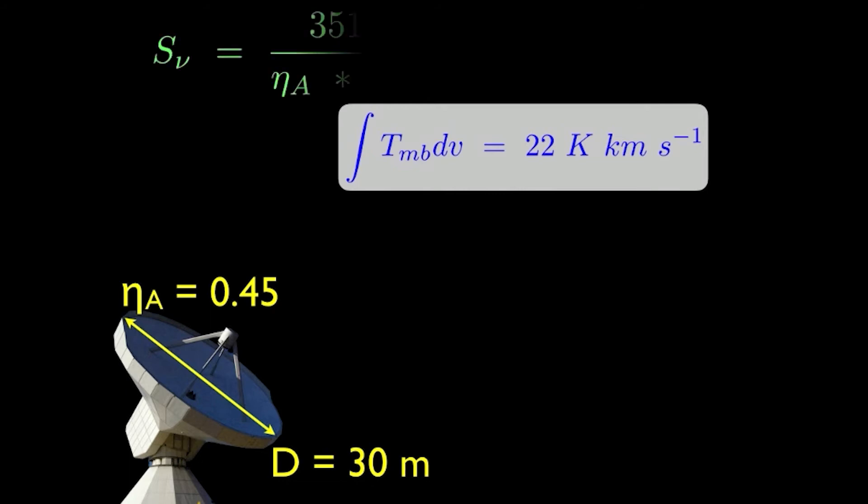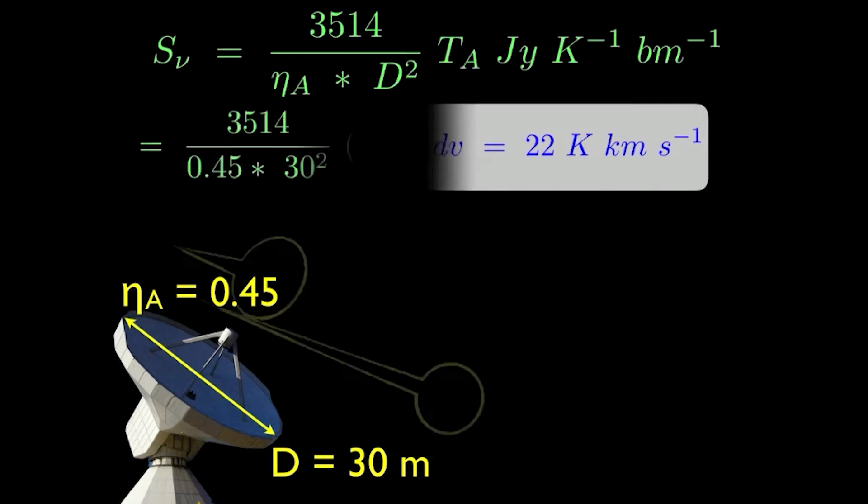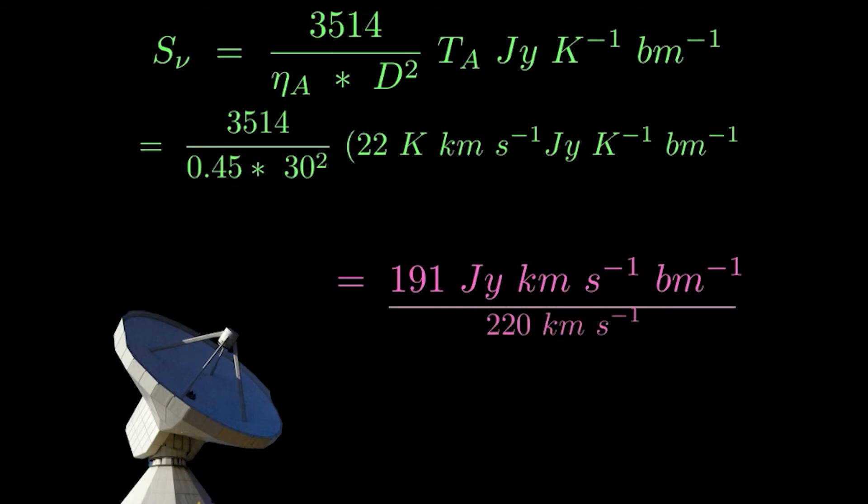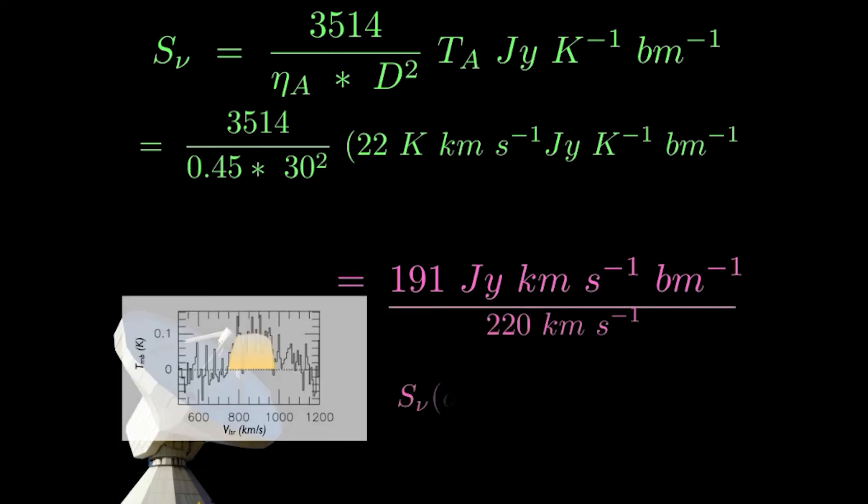Plugging these values into the point source approximation, we find that the measured flux density is 191 Janskys kilometer per second per beam. Dividing by the line width, and noting that the line is relatively flat, the average intensity of the line is about 0.9 Janskys per beam.